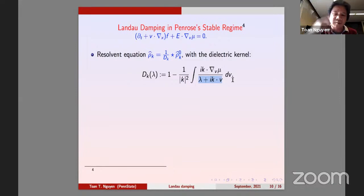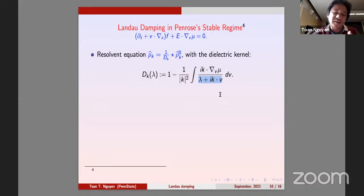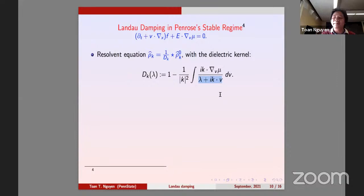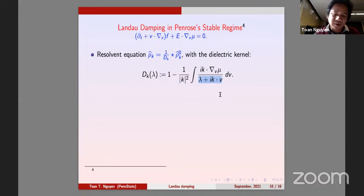There are three regimes: when k is large, the electric field is very small compared to free transport. When k is in between, they have to compete and plasma may or may not be stable. The Penrose stable regime is where plasma is stable — meaning this ratio never equals one — and it applies to all monotone equilibria. Penrose's contribution allows one big bump with a small bump; two bumps gives an unstable plasma.